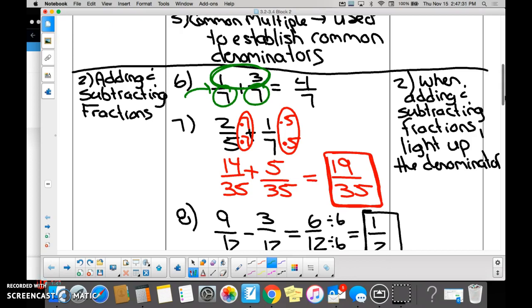Now, on number seven, the problem was two-fifths plus one-seventh. Are the denominators the same? No. So after we light up the denominator, we realize they were different. We need to find what? Common denominator. Five and seven have a common multiple or common denominator of 35.